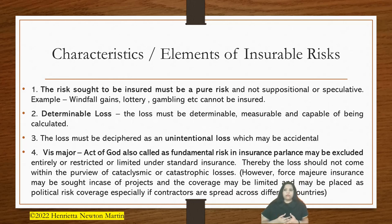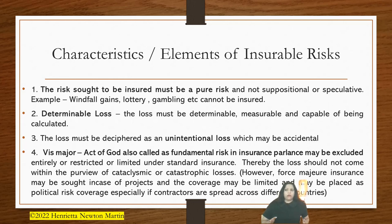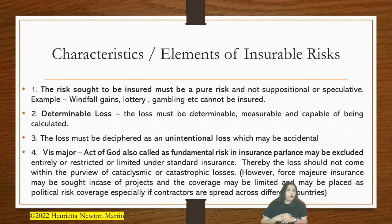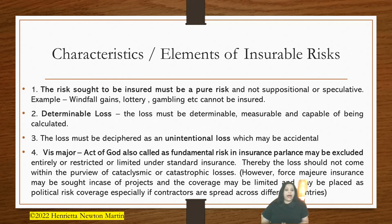There are many cases sub-pending in the courts where the insured or even the beneficiaries create a loss or design intentional loss and then try to claim from the insurance company. The underwriters are quite smart enough — they would ask the insured for certain documents, certain evidence that the loss has occurred, and certain reports. For example, if there is an accident, they would ask for the police report. The loss must be deciphered as an unintentional loss and should not be a planned loss; however, it may be accidental, but it has to be proved through various evidence such as a police report.